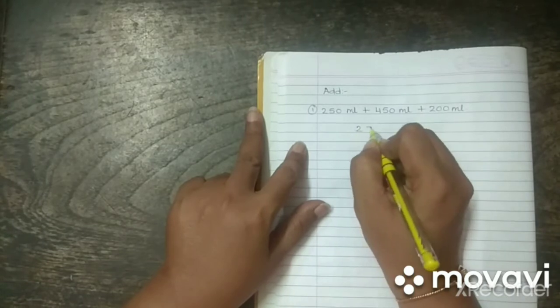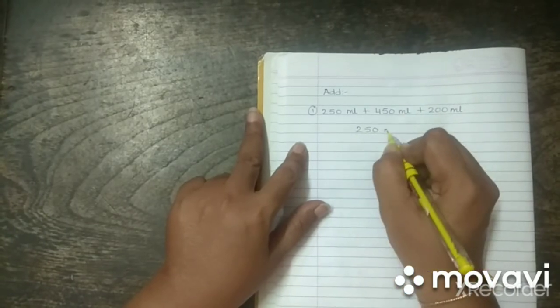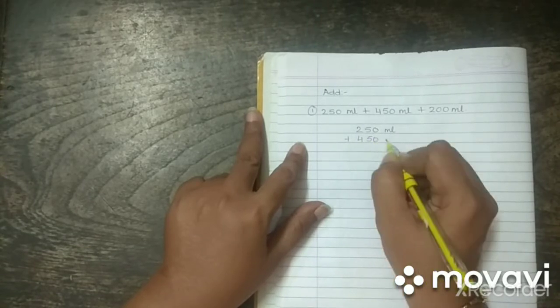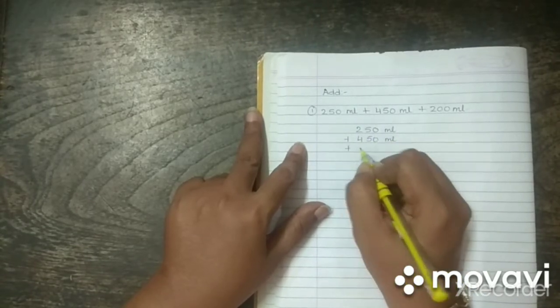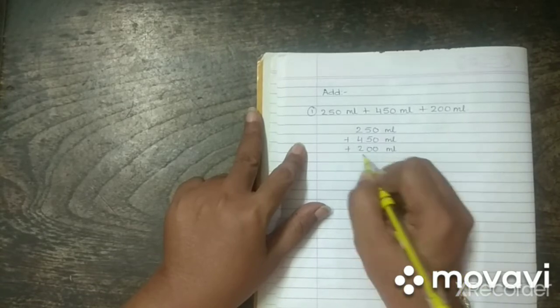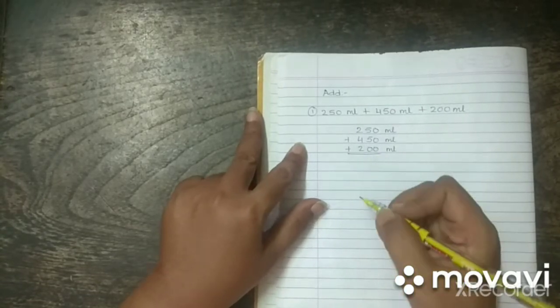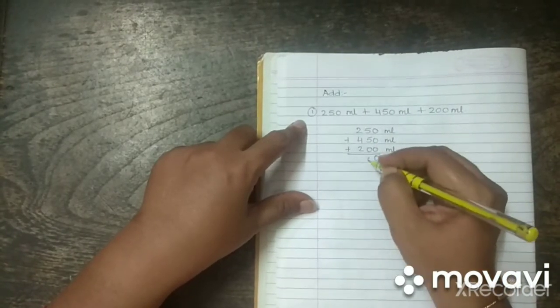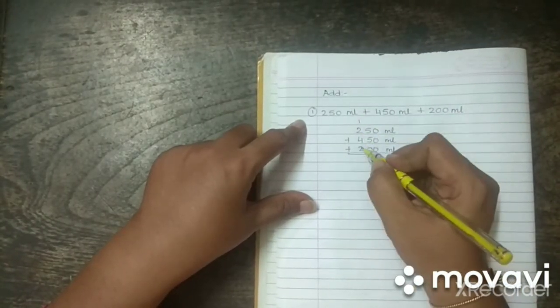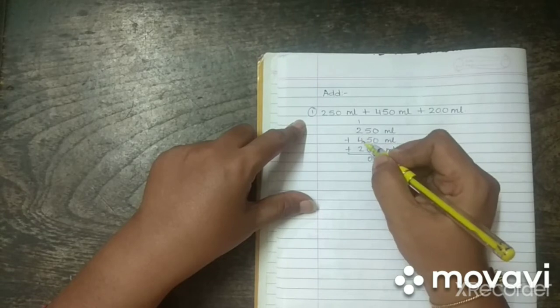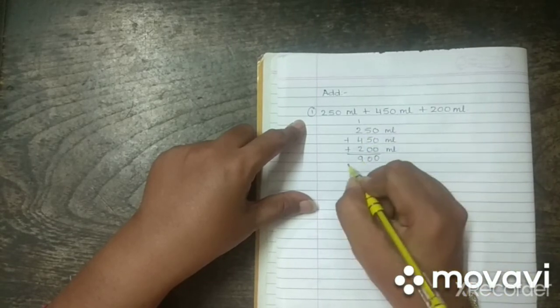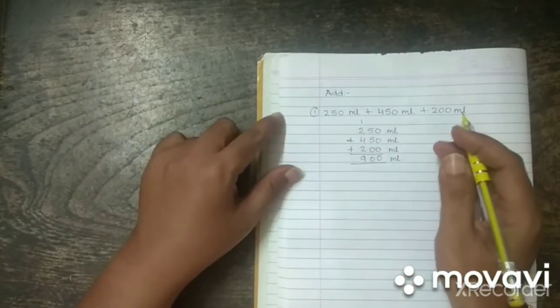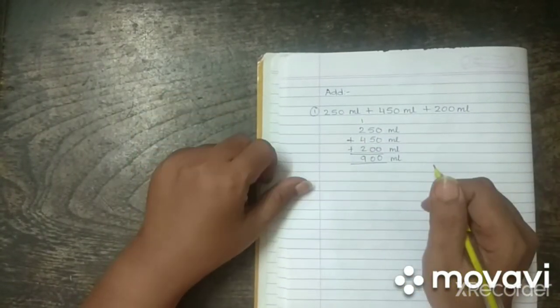So, you have here 250 ml plus 450 ml plus 200 ml. So, you are going to add up all the three measurements. So, you get 0, 5 and 5 is 10, 2 and 2, 4 and 4, 8 and 1. You get 900 ml as the answer. This is a simple addition, straight and easy to understand.